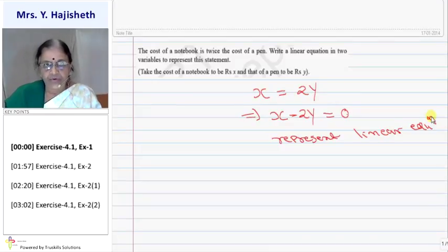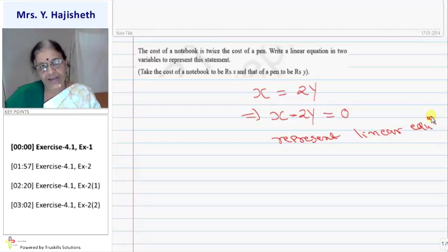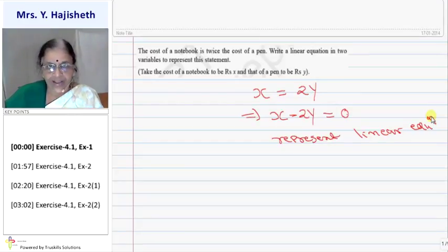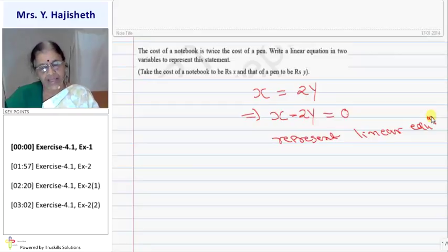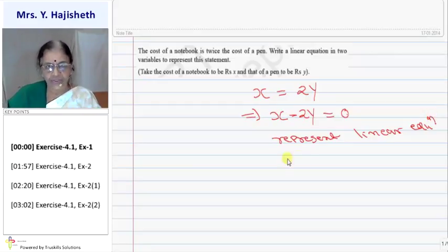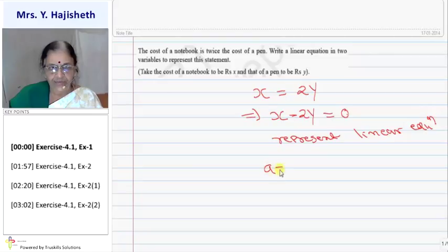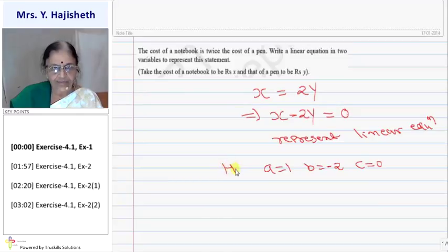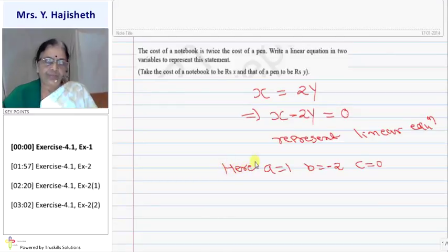Let cost of notebook be x and cost of pen be rupees y. Then cost of notebook is twice the cost of pen, so I can write x equals two y. Therefore x minus two y equals zero. Here a is one, b is minus two and c is zero. It is just the general form of a linear equation.